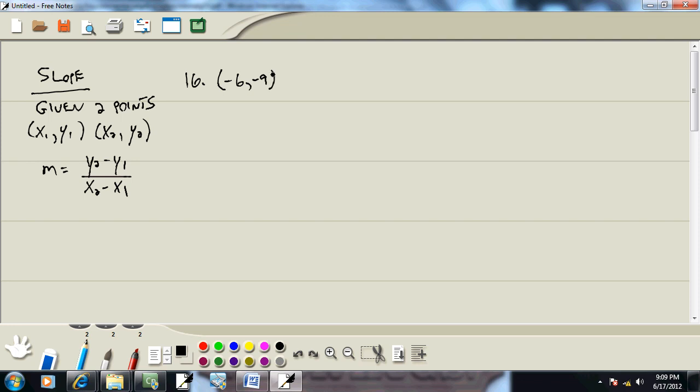Negative 6, negative 9, negative 5, and 7. Well, first thing we'll do, this is our first point, and this is our second point. So our first point we'll label as x1, y1. And this one will be x2, y2.